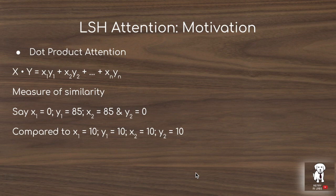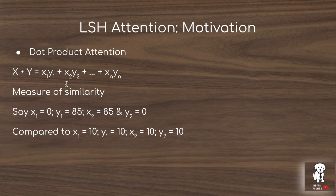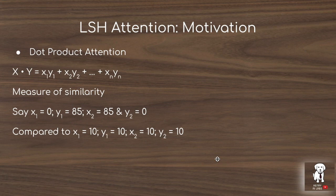Now we look at the locality-sensitive hashing approximation to attention. The motivation is that dot product attention — multiplying queries by keys — is really a measure of similarity via element-wise multiplication and summation. For example, if x1=0, y1=85, x2=85, y2=0, the dot product is 0 despite high magnitudes, whereas x1=10, y1=10 gives 200. For a sequence of 64,000 words, LSH sorts it so you only compute the query times the most similar ~16 keys.